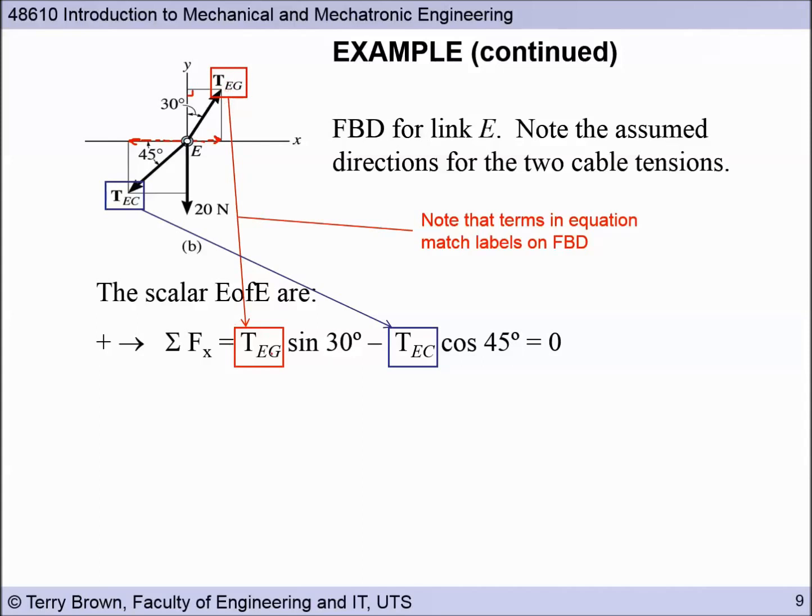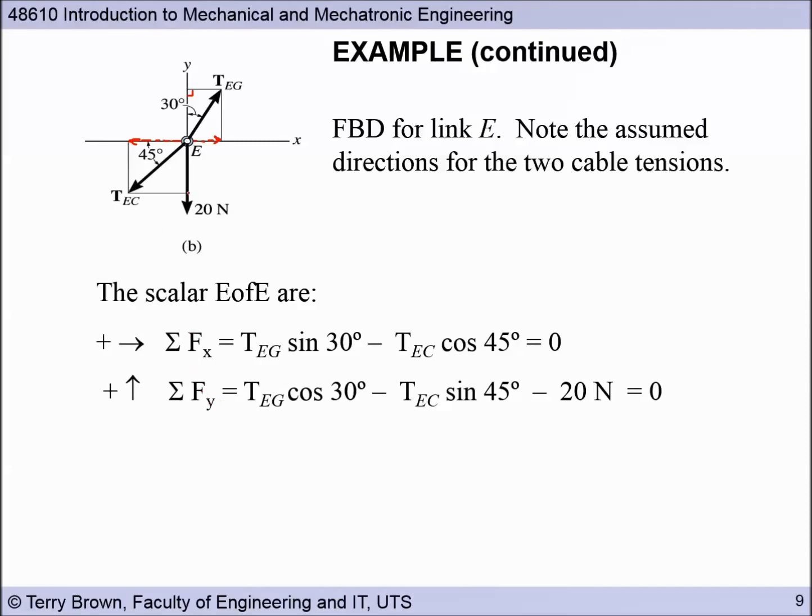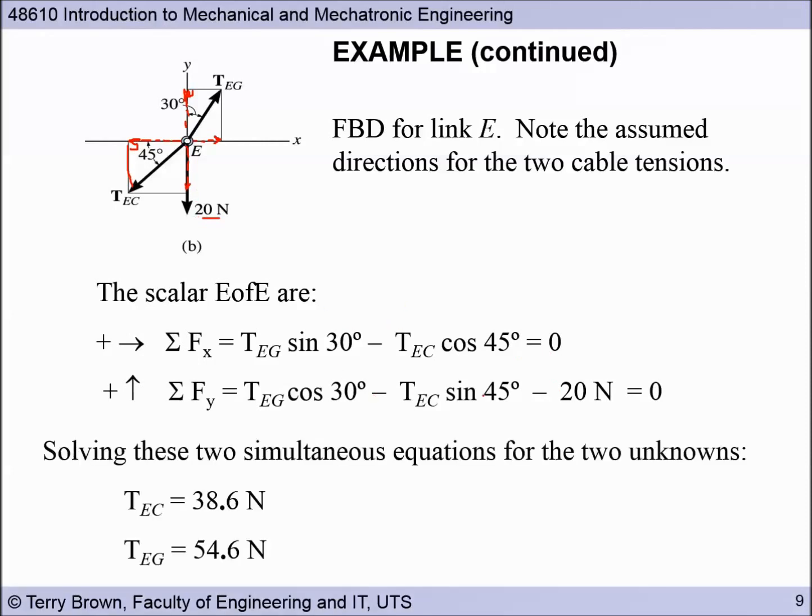Okay. So looking at our forces in the y direction, we have TEG, so we need our component along there like this. So this time it's cos 30 degrees, cos 30 in the positive direction. Then we have TEC, its vertical component is here, so we need the length of that side of our right angle triangle, which will be sine. This time two equations, two unknowns again. Solve the simultaneous equations for the unknowns. Okay.